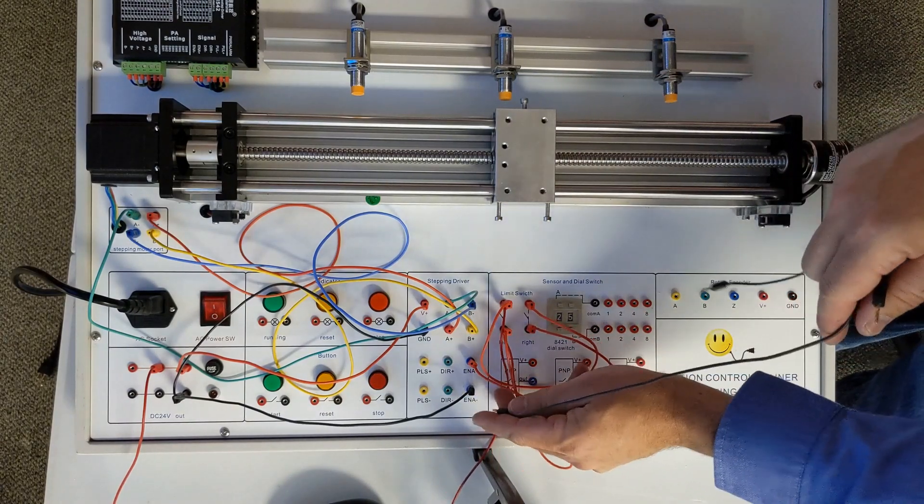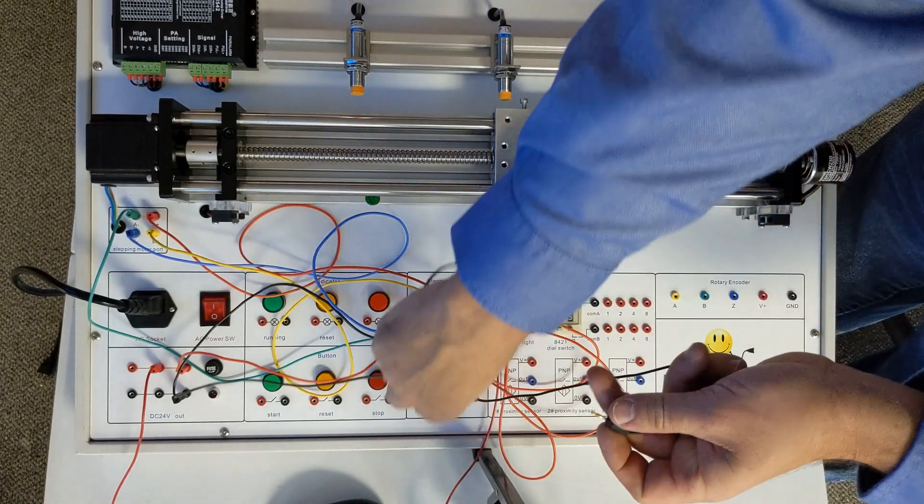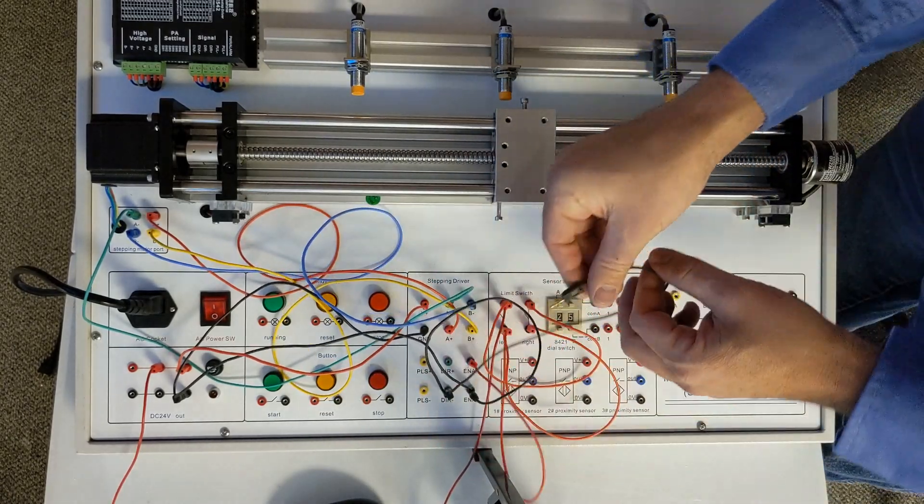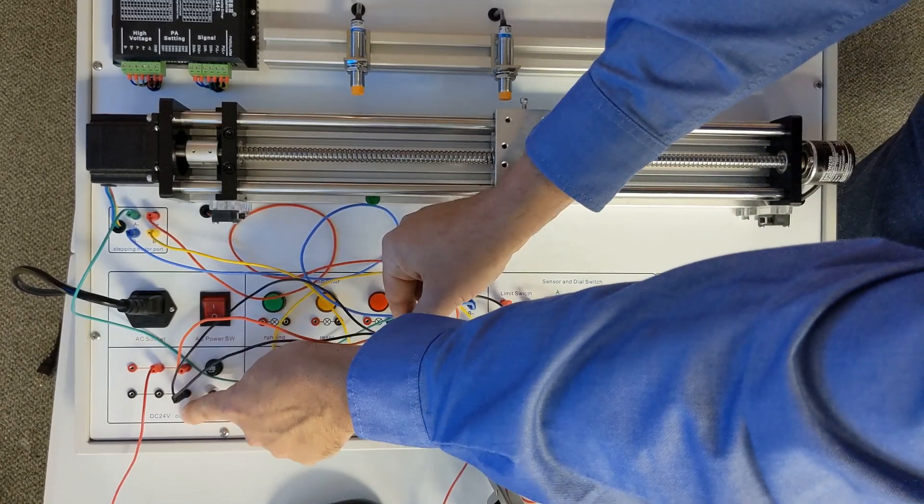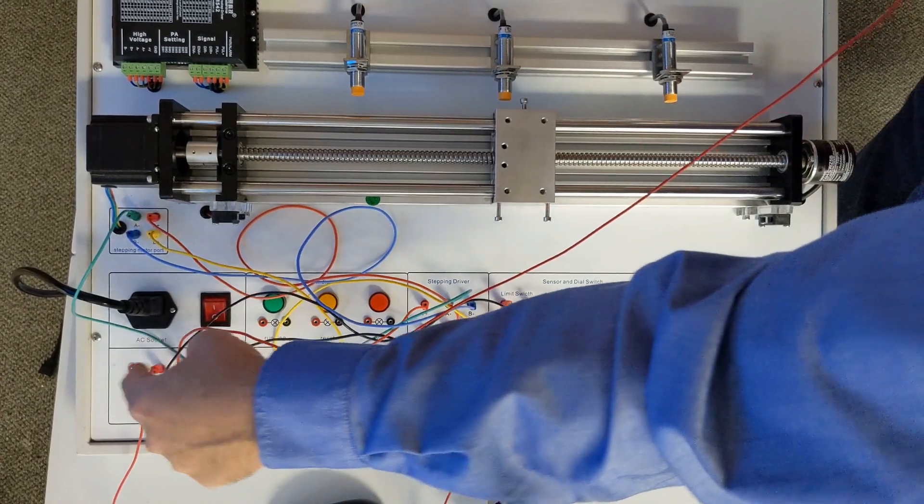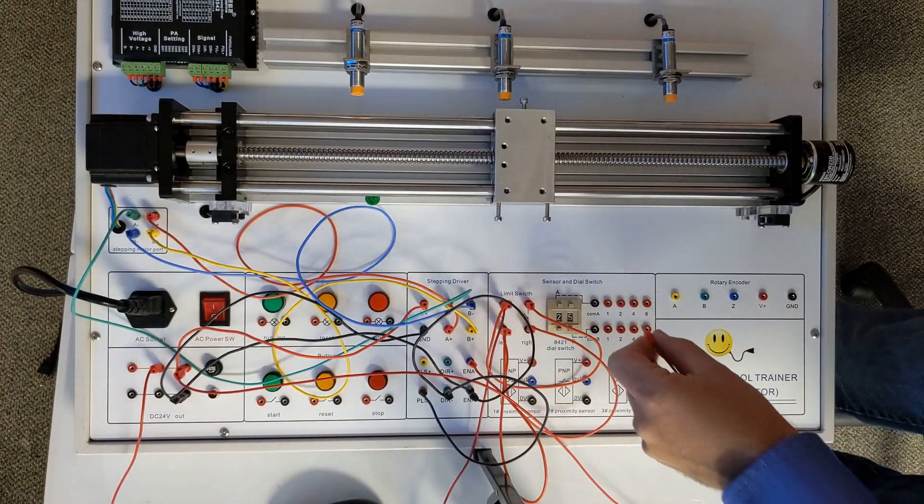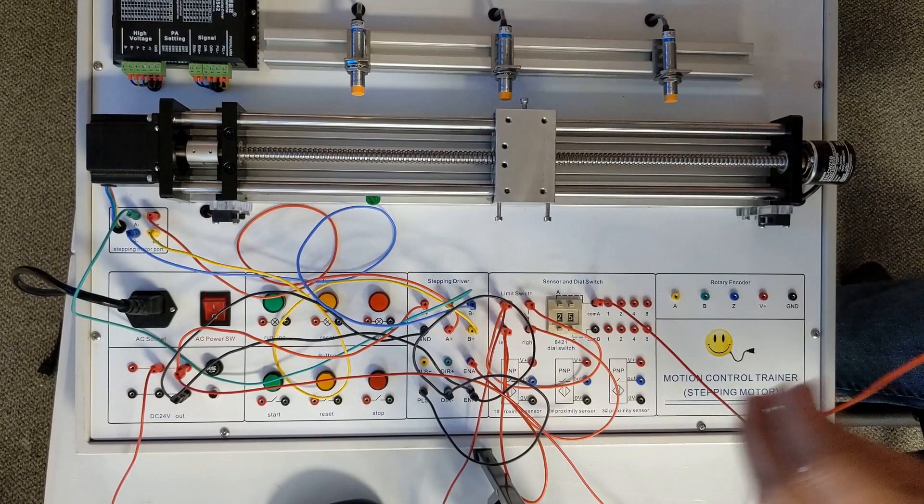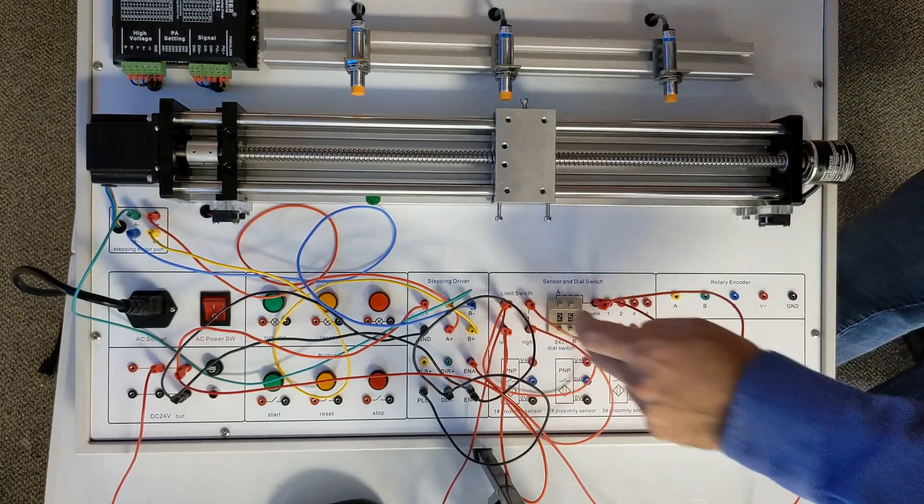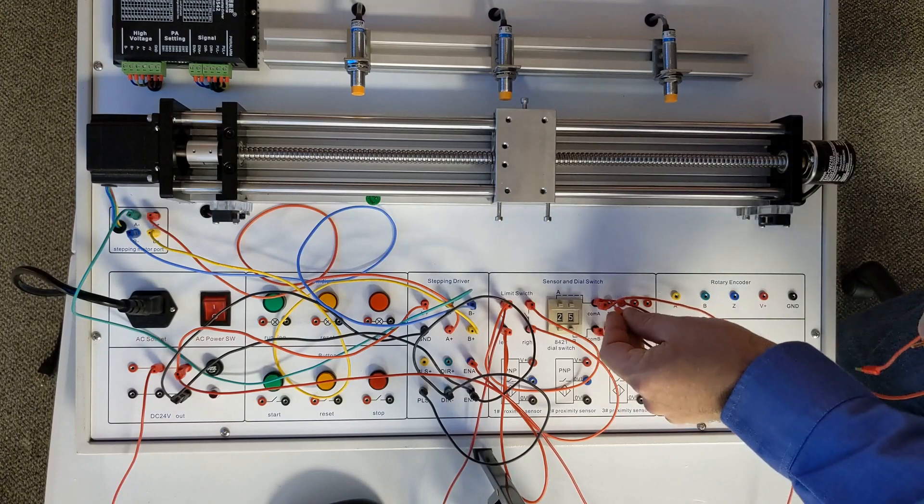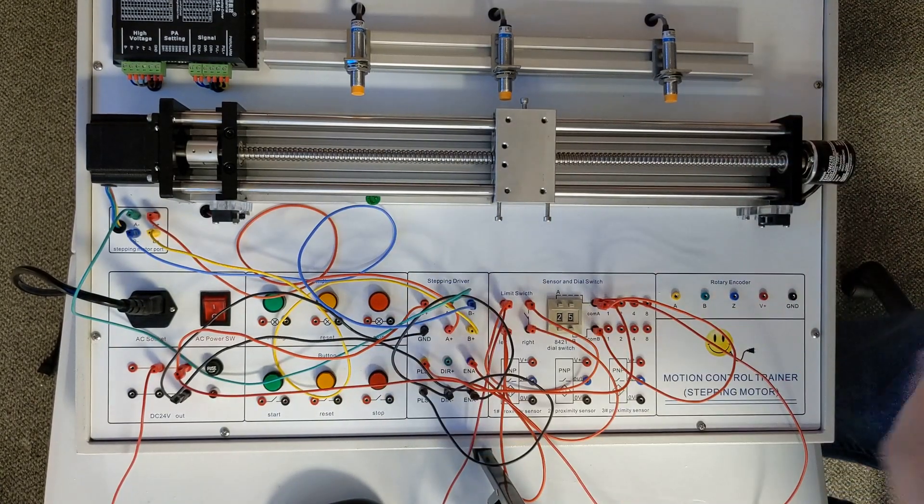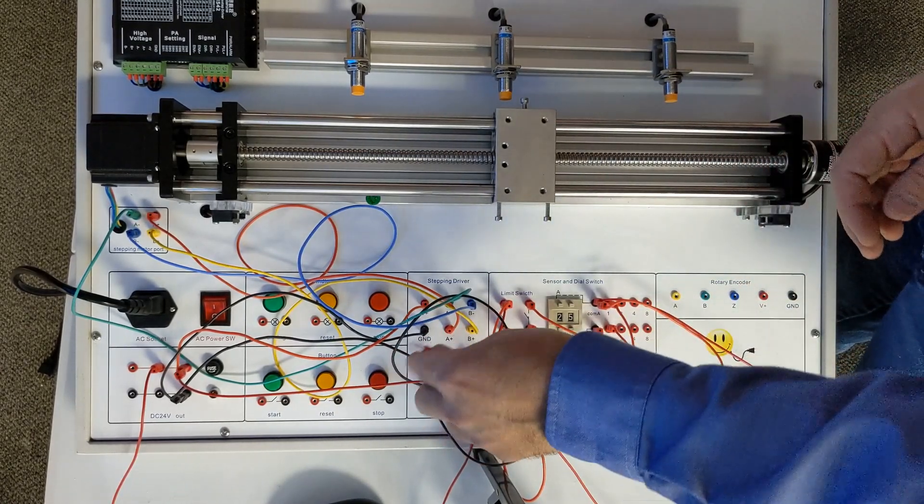Next what we're going to do is jumper the ENA minus to the DIR minus to the PLS minus, so that's going to make all of them connected to the black or the zero volt of our 24 volt. I'm going to take a wire and connect it to the plus 24 volt which is the red set of terminals and connect it to the COM A, then jumper from that COM A to the COM B. That's going to put 24 volt on one side of our contacts. Now I'm going to take a wire from the one of COM A and make that our pulse, and take a wire from the one of COM B and put that on direction.